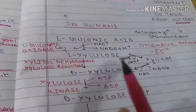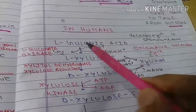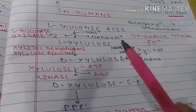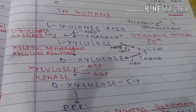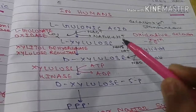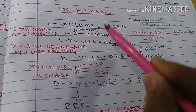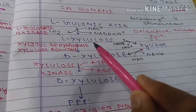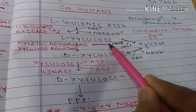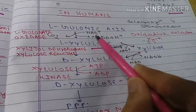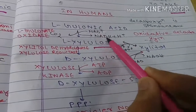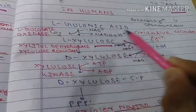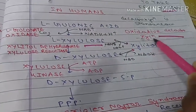In humans, the pathway diverges. L-gulonic acid is first converted to L-xylulose by oxidative decarboxylation — NAD+ is consumed, CO2 is released — so both oxidation and decarboxylation occur in this step.